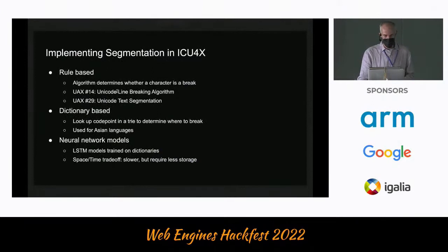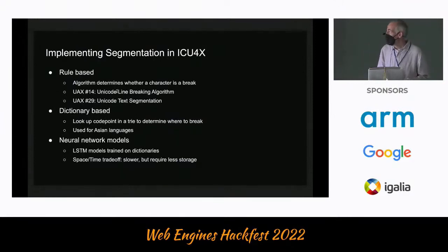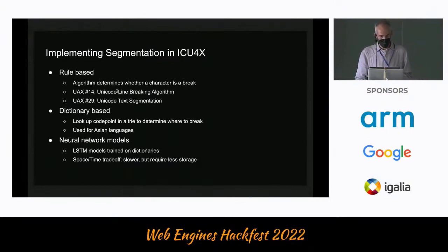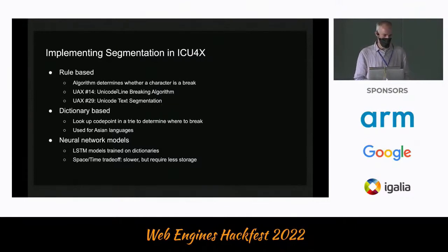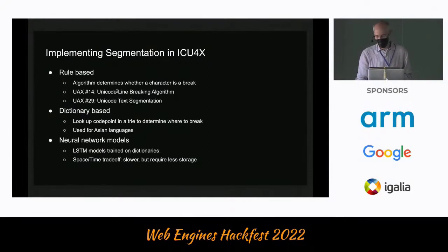We've been working on implementing segmentation in ICU4X. We've implemented three models: one rule-based, based on two algorithms defined by Unicode, suitable for relatively simple languages; a dictionary-based model based on looking at code points in a tree, used for Asian languages; and then Google developed some neural network-based models trained on those same dictionaries — these are more or less a space-time trade-off: they're slower but require less storage.